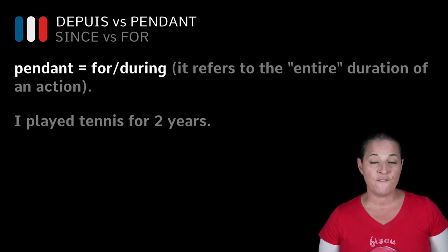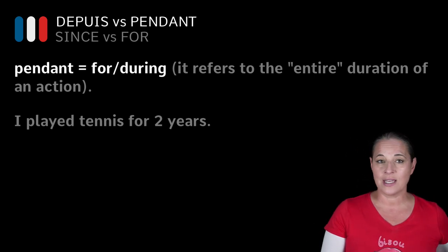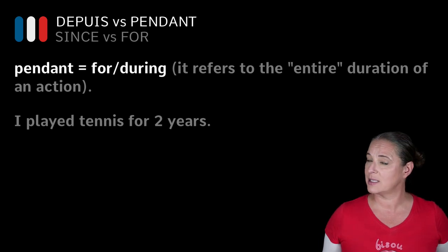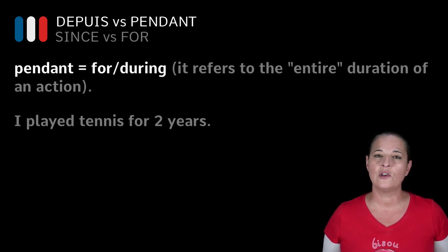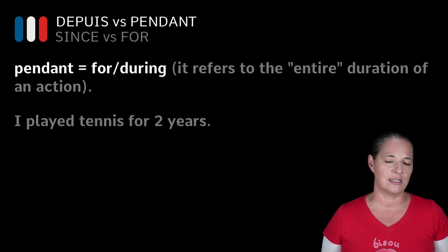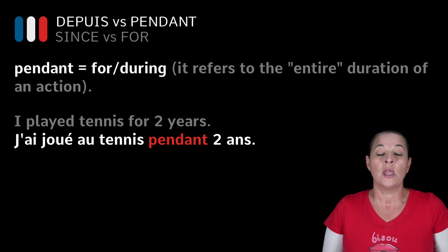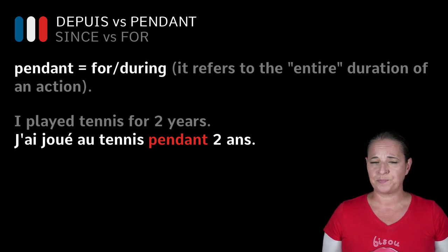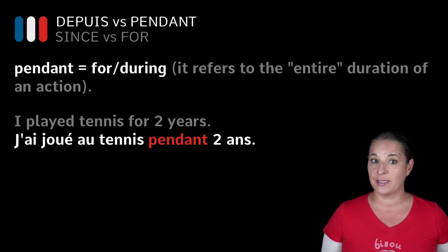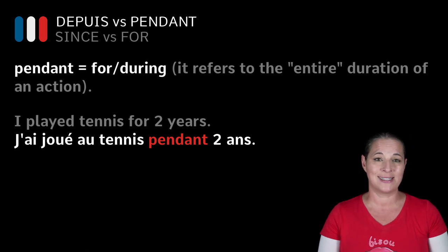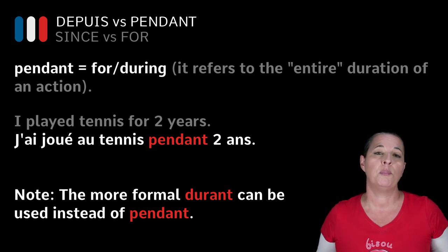'I played tennis for two years.' You see the difference from the first examples? Not 'I have been playing tennis' — because that started in the past and is still happening — but 'I played': it's gone, done, over with. In that case, you use 'pendant' for the translation: 'j'ai joué au tennis pendant deux ans.' The difference here is that we are not using 'depuis' as the past continuous tense is not used, but the past tense is. Bear in mind that you can also use 'durant' instead of 'pendant.'